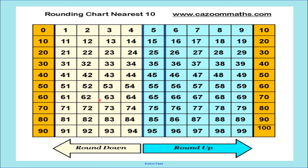Now suppose I want to round the number forty-five. Where is forty-five? It is exactly in between forty and fifty. It is not near forty and it is not near fifty — it is exactly between forty and fifty. So in this case we round it to the higher ten. Here the higher ten is fifty, so forty-five will round up to fifty.